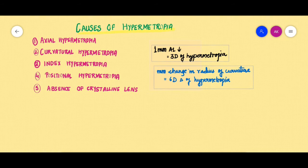To enumerate, the causes of hypermetropia are: axial hypermetropia, curvature hypermetropia, index hypermetropia, positional hypermetropia, and hypermetropia because of the absence of the crystalline lens. Now let us look at it one at a time.